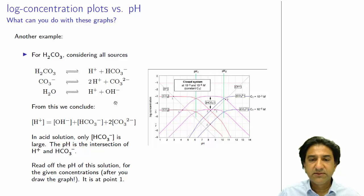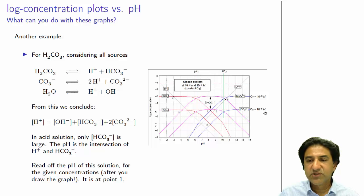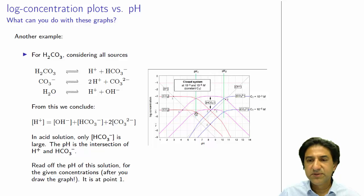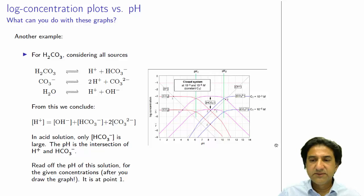We have to draw the log concentration plot for the carbonate system. We just need to know pKa1 and pKa2 of the system and the total concentration. This graph shows the total concentration at 10⁻⁵ molar and also at 10⁻³ molar. Here we have the H₂CO₃ line, essentially very similar to the dissolved CO₂ concentration, shown in red. In pink, we have the HCO₃⁻ concentration line, intersecting 0.3 units below pKa1 and 0.3 units below pKa2. In blue, we have the carbonate concentration line.